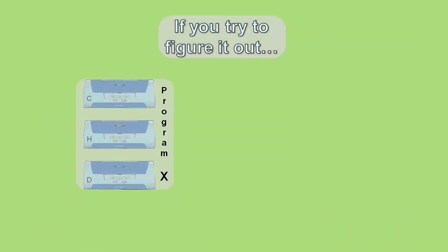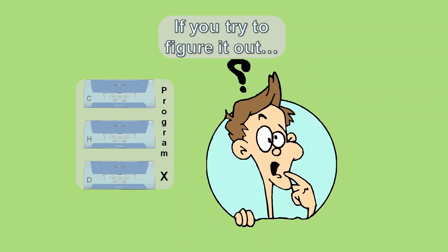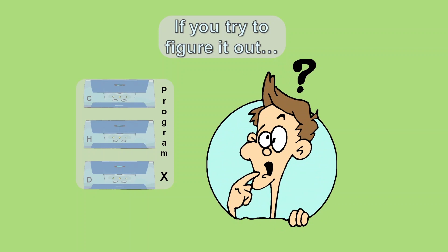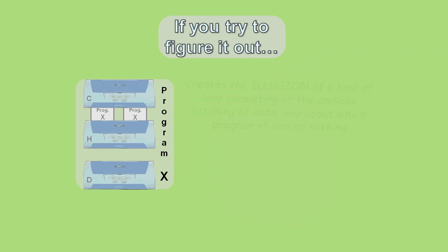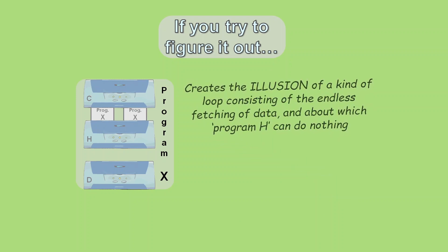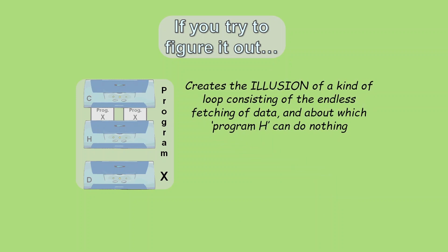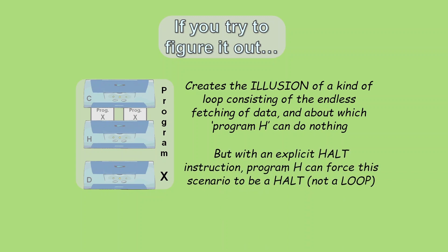Tara thinks that most humans get tricked by the illusion that Program X creates. She thinks that when they try to figure out what happens inside Program X after H receives its input, it can seem like functionality H would examine the code of Program X and see that it needs to include functionality H, which in turn would need to have an input of Program X, and so on and so on. And so it creates the illusion of having to endlessly fetch more and more data, a problem it would appear that functionality H can't do anything about.